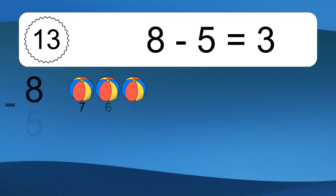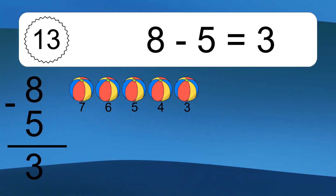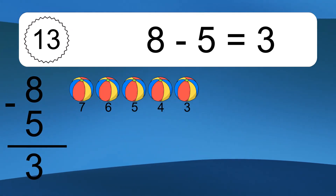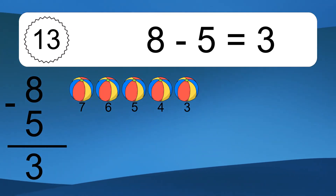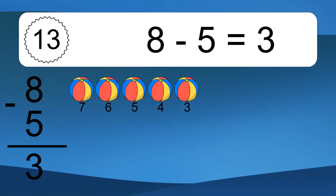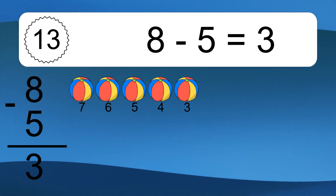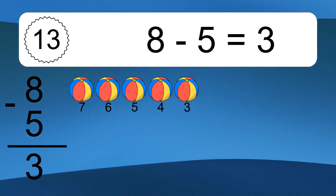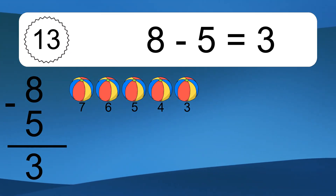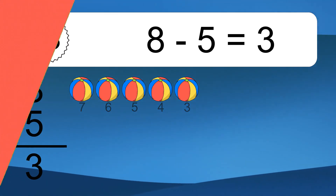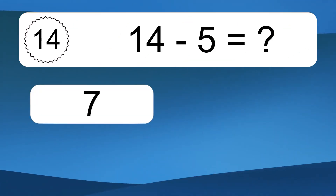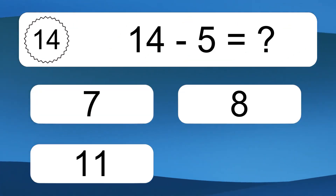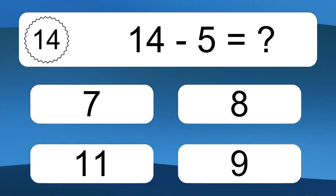8 minus 5 equals 3. Let's count it! 7, 6, 5, 4, 3. 14 minus 5 equals what?